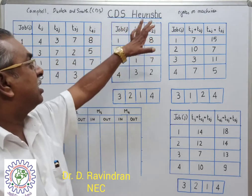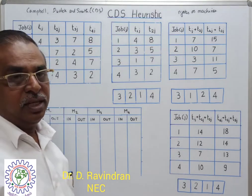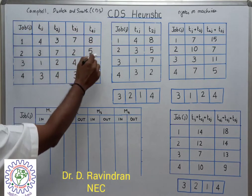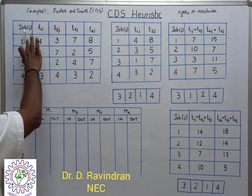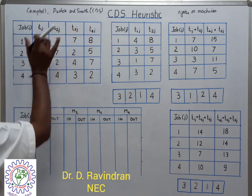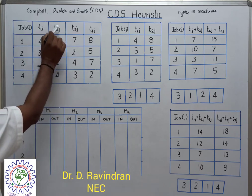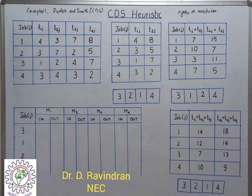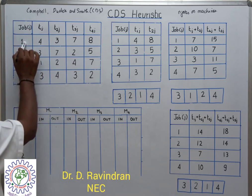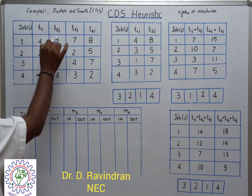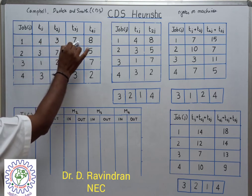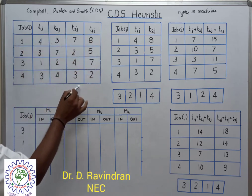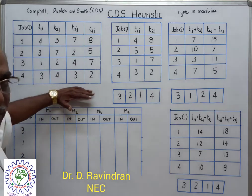Let us try to understand this heuristic with the aid of a numerical illustration. We are considering four jobs and four machines. Each machine M1, M2, M3, M4 has processing times for these jobs. For example, job 1 has 4 hours of processing time in machine 1, 3 hours in machine 2, 7 hours in machine 3, and 8 hours in machine 4. Similarly, there are four jobs with processing times given. This heuristic is very simple.